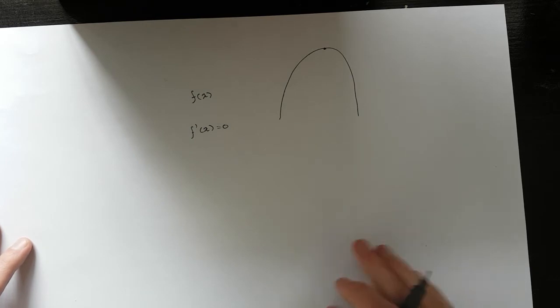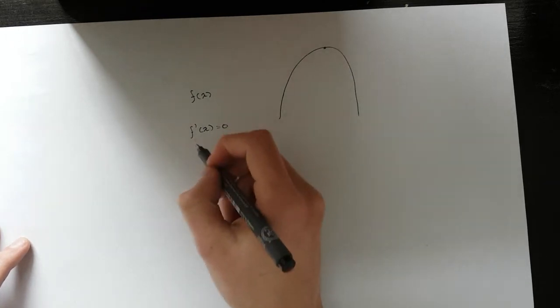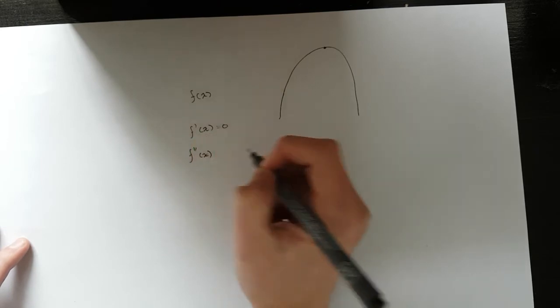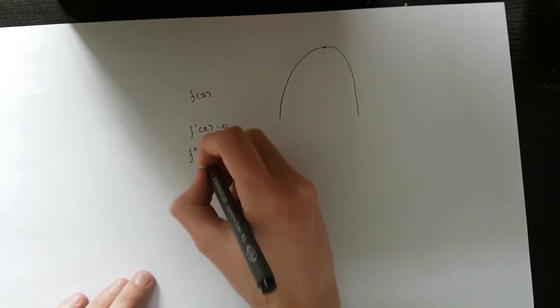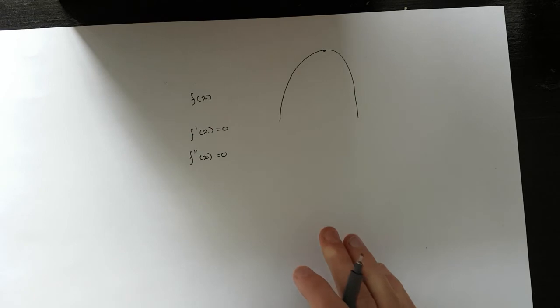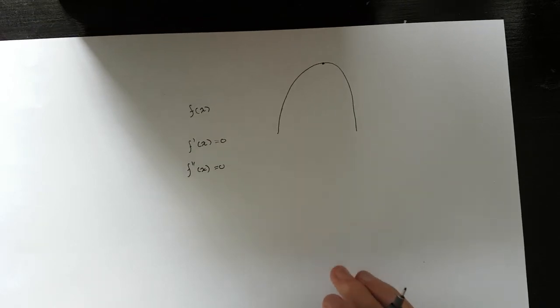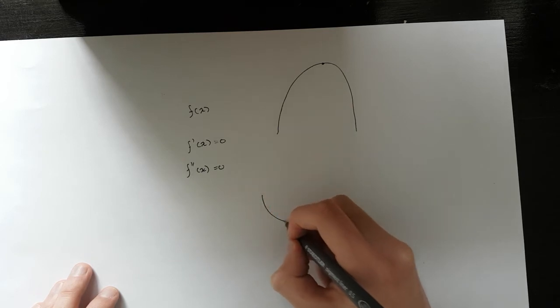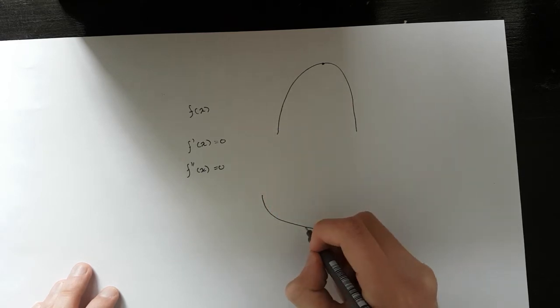Now you can also take a second derivative of this derivative to get the second derivative function. And if you set that equal to 0, you're gonna find a point on the graph where the curvature of the graph changes. So let's say we had for example this curve.